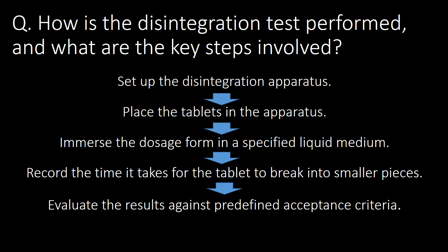How is the disintegration test performed and what are the key steps involved? Step 1: set up the disintegration test apparatus. Step 2: place the tablets in the apparatus. Step 3: immerse the dosage form in a specified liquid medium. Step 4: record the time it takes for the tablet to break down into smaller pieces. Step 5: evaluate the results against predetermined acceptance criteria.